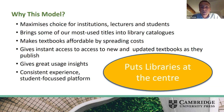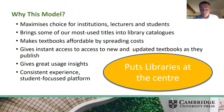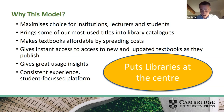The second point is that it brings some of our most used titles into library catalogues. Textbooks get some of the highest usage of any of our books. So this gives you access to our most used books, thereby increasing your usage as well. Third, it makes textbooks affordable by spreading costs. Textbooks are very expensive to produce — typically some of the more complex books we make — and the subscription model spreads those costs both over time and across institutions, making them much more affordable.